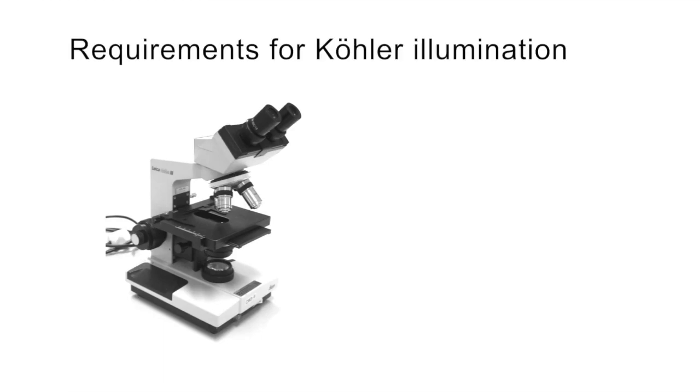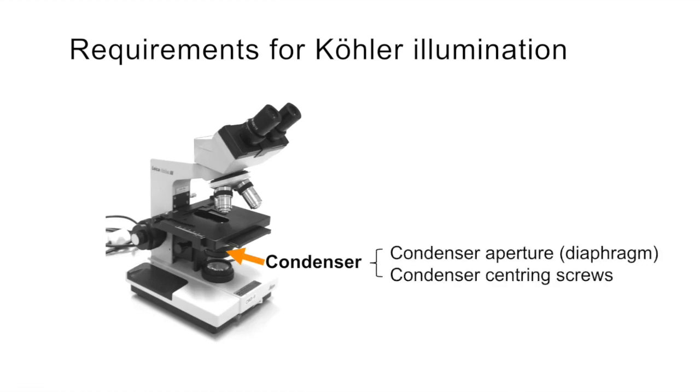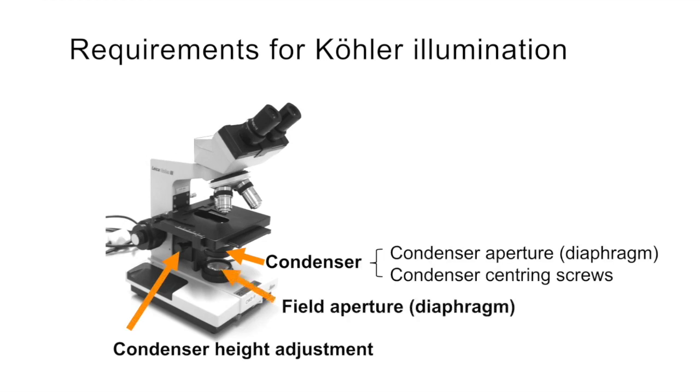So what do we need to ensure this is set up correctly? We need a condenser, and ideally we should have control over the aperture and the centering using centering screws, as well as being able to adjust the height. It's also ideal to be able to adjust the field aperture, but if that's not possible, we can get pretty close using either a sharp pen or a pencil.